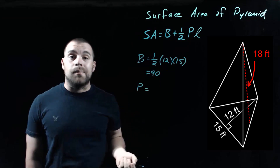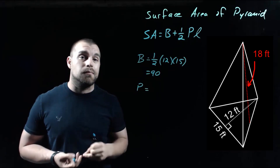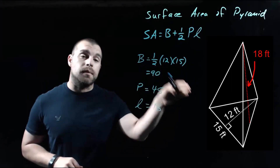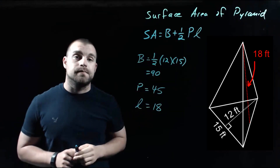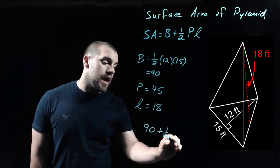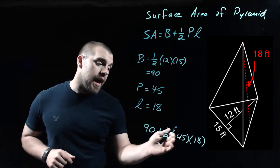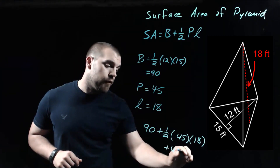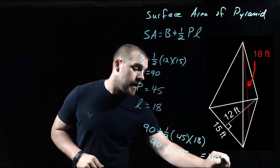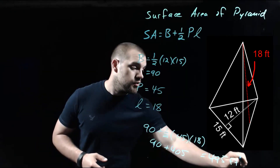Now we need the perimeter of the base — we add up all the sides. Since this is an equilateral triangle, all the sides are the same length: 15 plus 15 plus 15, so the perimeter is 45. We're also given the slant height, which is the 18 length running perpendicular from the vertex down to the base. Plugging into our formula: 90 plus one half times 45 times 18. One half times 45 times 18 gives us 405, so 90 plus 405 equals 495. All measurements are in feet, so this is 495 feet squared.